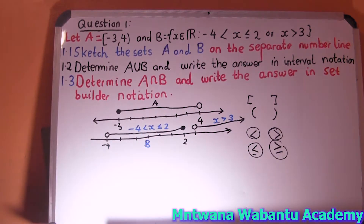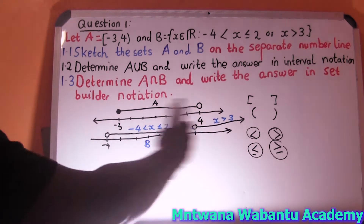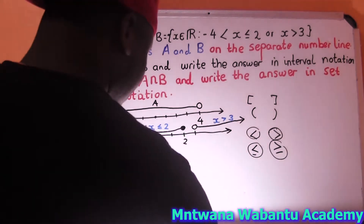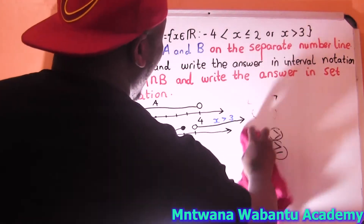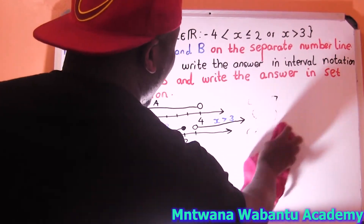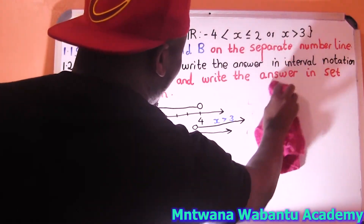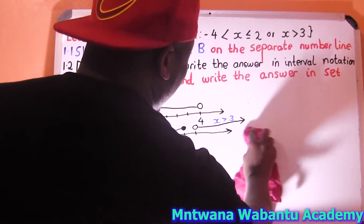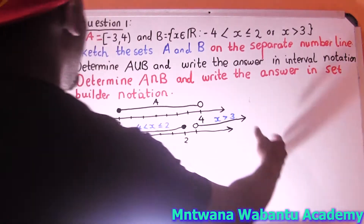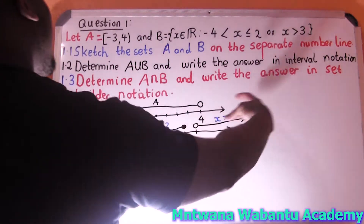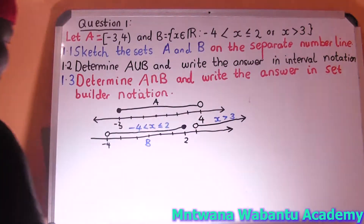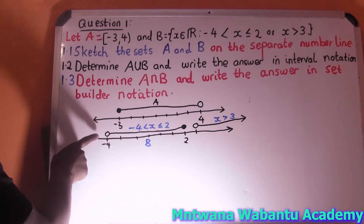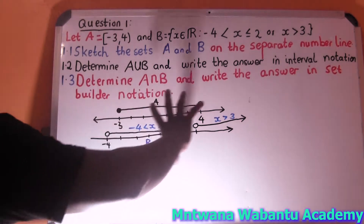Now what do they want? They say determine A union B. Union means we put them all together. Let's try to combine A and B and find A union B. The initial starting point is going to be — look at this — all together.